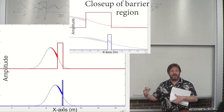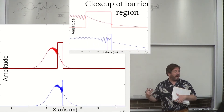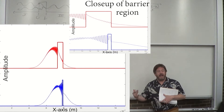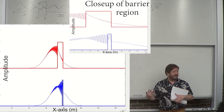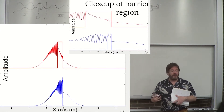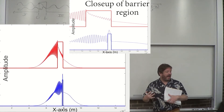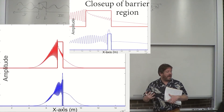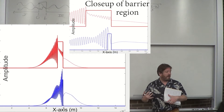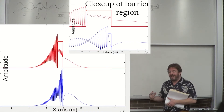Now you're seeing the blue one has hit, and it's going through the thin barrier very efficiently, and the red one less so, which makes sense — the blue barrier is way thinner. In fact, you can see that it's about halfway through, and clearly a lot more of the blue wave is going through than the red wave.